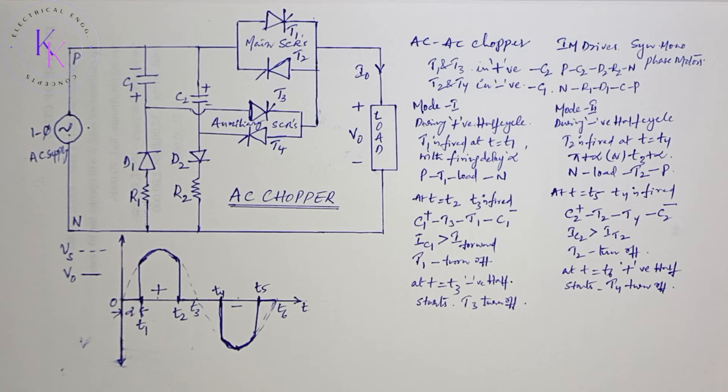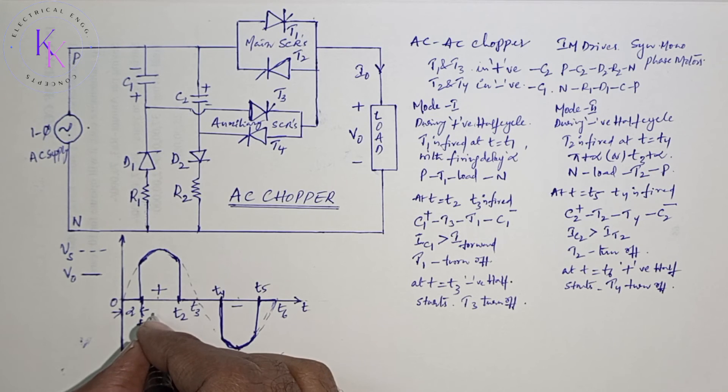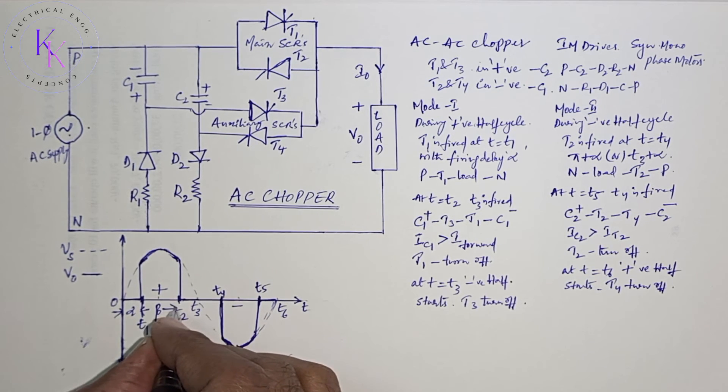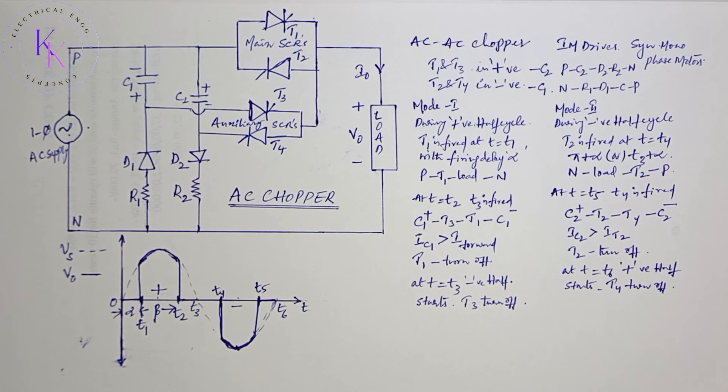The output frequency is determined by the thyristor switching rate by varying pulse width beta. This is the pulse width between T1 and T2, represented with beta, and the power output can be varied by varying this beta.